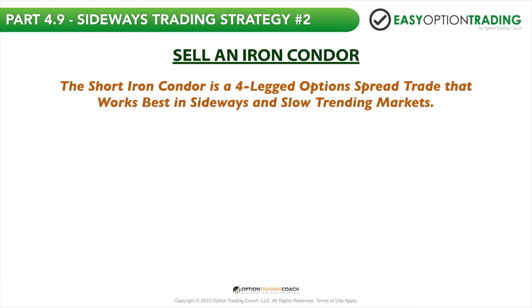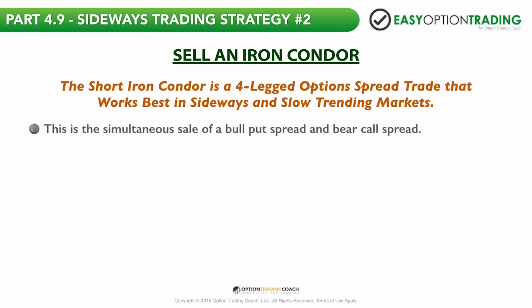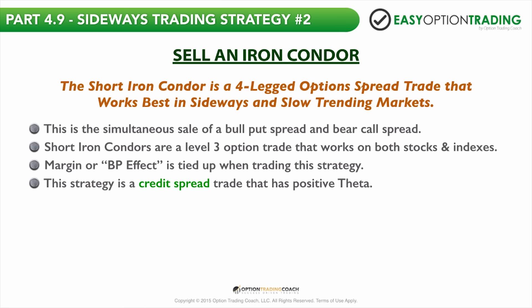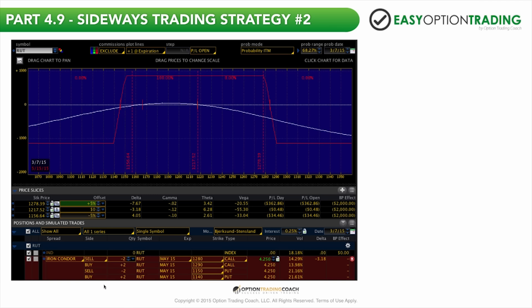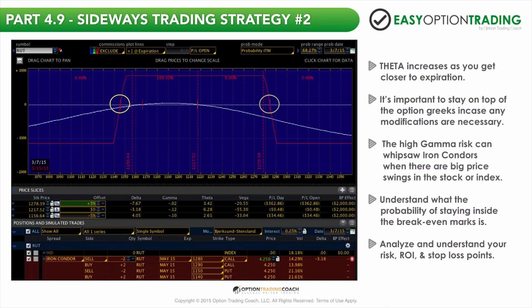The short iron condor is a four-legged option spread trade that works best in a sideways, range-bound market or slow-trending marketplace. This trading strategy is the simultaneous sale of a bull put spread and a bear call spread — two vertical spreads embedded — so it's a credit spread trade with positive theta. In this simulated trade, we're selling a 1280/1290 bear call spread on the upside and selling the 1150/1140 bull put spread on the downside. It's important that you understand the dynamics of how this strategy works — theta will increase as you get closer to expiration.